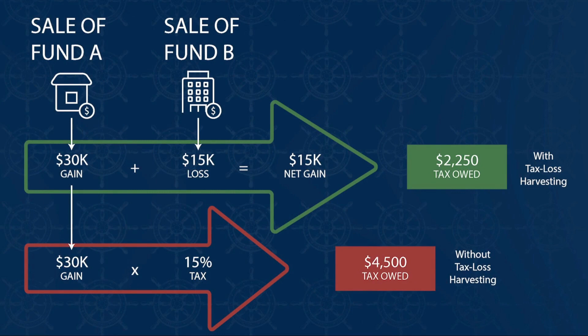Let's go over an example to better understand tax loss harvesting. In reviewing your investment portfolio, you see that Fund A has a gain of $30,000 and Fund B has a loss of $15,000. Tax loss harvesting is a method to consider offsetting these gains. If you sell Fund A that has gains of $30,000 and then you use the losses of Fund B of $15,000, your $15,000 loss would offset the $30,000 gain. By doing this efficiently, your total taxable capital gains would be lowered to $15,000.